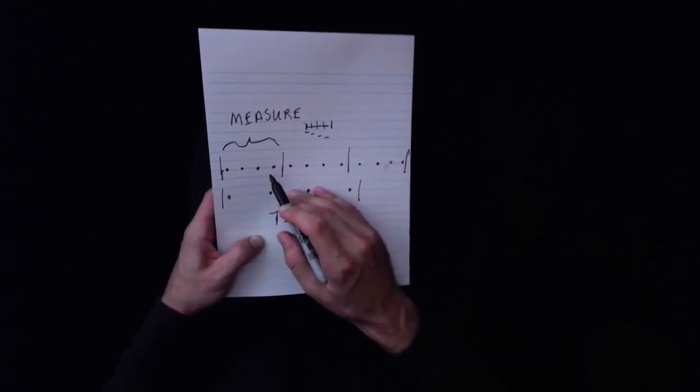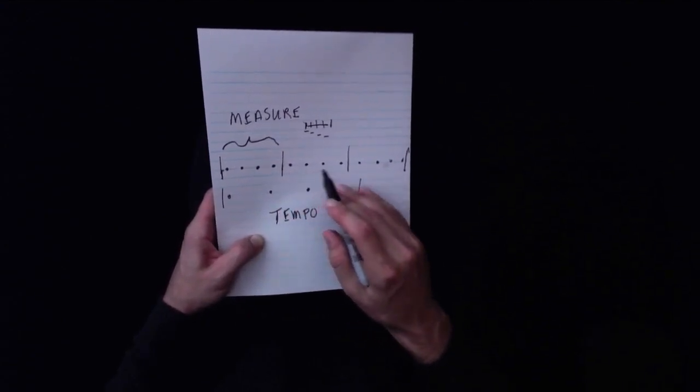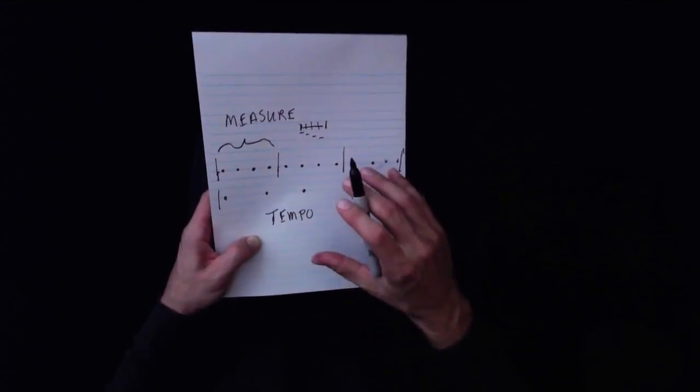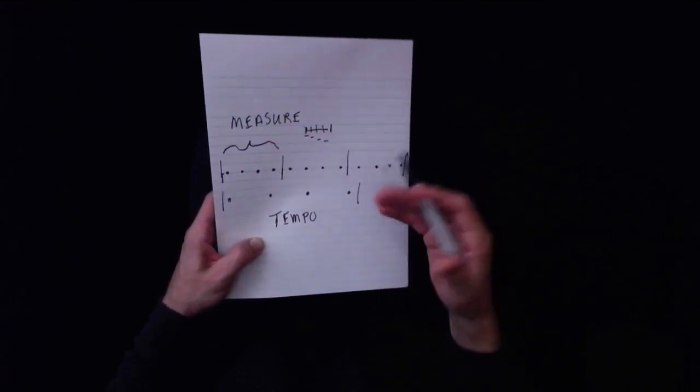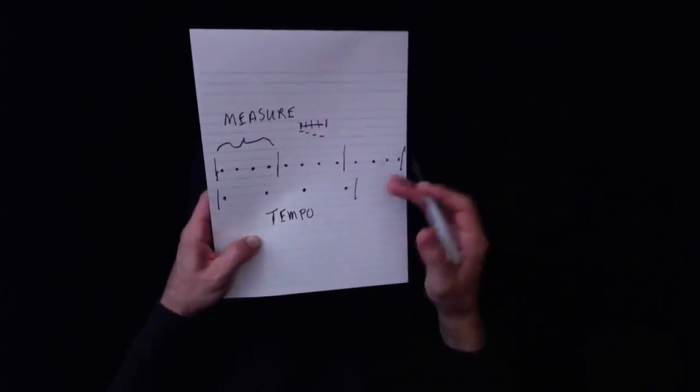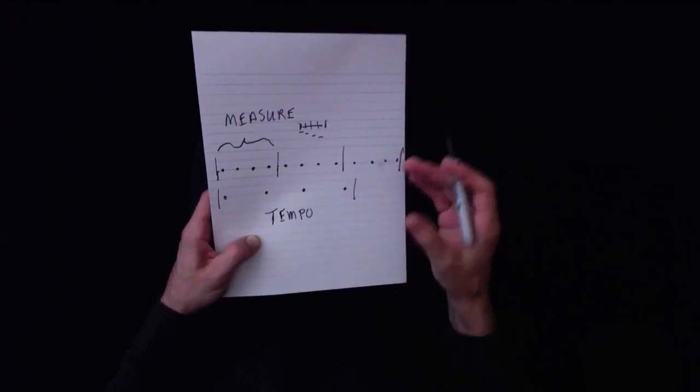Measures are how the entire band stays on beat together and how they know when to change chords or parts or songs or whatever it is all at the same time.